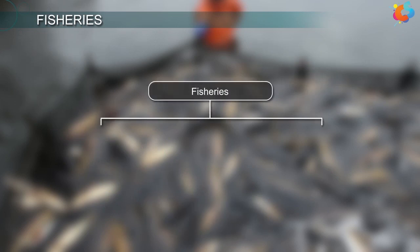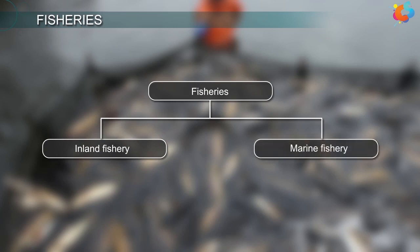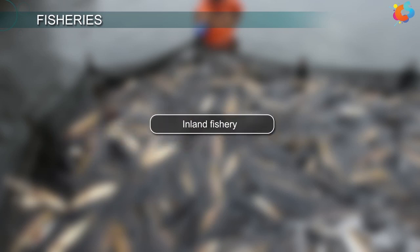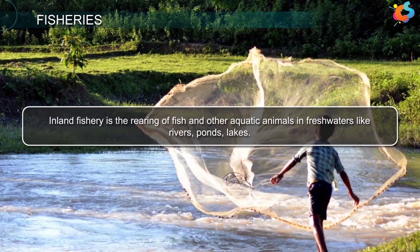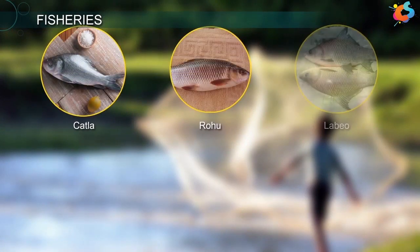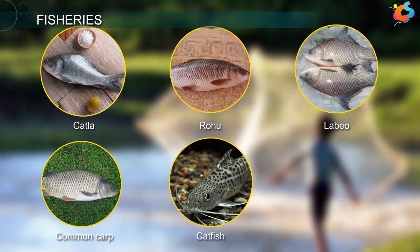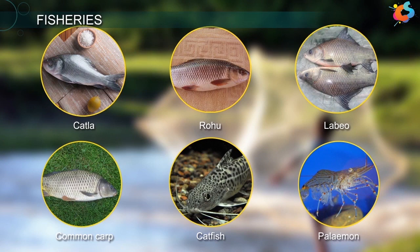Basically, there are two types of fisheries, namely inland fishery and marine fishery. Inland fishery is the rearing of fish and other aquatic animals in fresh waters like rivers, ponds, lakes, etc. Generally, fish like catla, rohu, labeo, common carp, catfish and freshwater prawns like palaemon are cultivated in freshwater fisheries.